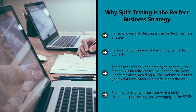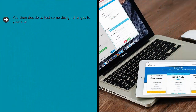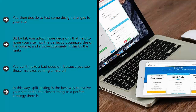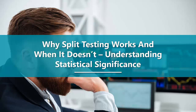Using split testing, you might decide to start using more H1 tags with keywords in, or you might choose to start using images a little more — this causes a bump in your position. You then decide to test some design changes to your site, convincing you that you should be using a slightly less busy and more modern layout. You therefore switch to a new theme for your WordPress site that looks great. Bit by bit, you adopt more decisions to help hone your site into the perfectly optimized design for Google, and slowly but surely it climbs the ranks. You can't make a bad decision because you see those mistakes coming a mile off, and if you keep tweaking, you keep on improving. In this way, split testing is the best way to evolve your site and is the closest thing to a perfect strategy there is.